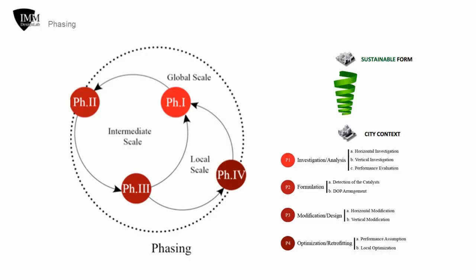IMM methodology is based on a multi-stage process composed of integrated phases: respectively, investigation, formulation, modification, retrofitting and optimization. As a complex system, the built environment is always subjected to change, and at any stage produces new thresholds of transformation. In this regard, transformation in the built environment adopts a non-linear form, which in form is similar to a spiral.